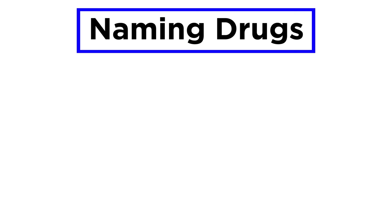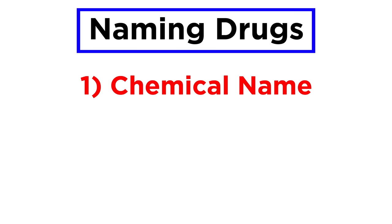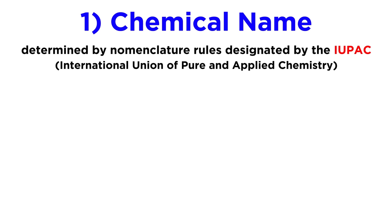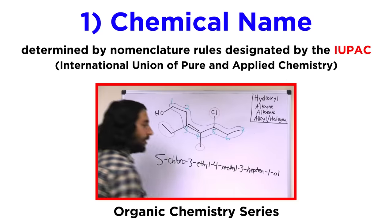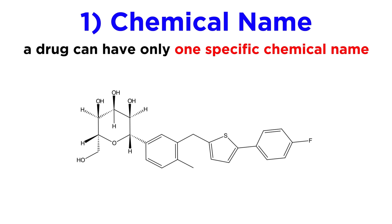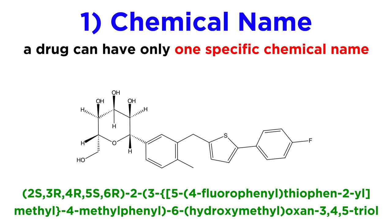Now that we have an idea of how drugs are classified, let's talk about how they are named. There is quite a bit of confusion amongst the public regarding drug names, and this is largely because all drugs always have multiple names. Drugs can have a chemical name, a generic name, and a trade name or brand name. First, the chemical name is quite straightforward. This is determined by the rules of chemical nomenclature designated by the IUPAC, or International Union of Pure and Applied Chemistry, precisely as we learned way back at the beginning of the organic chemistry series. A drug will only have one chemical name, because the rules are highly specific, and exist precisely for the purpose of giving any molecule one unambiguous name, even if it is very long and impractical for general use.